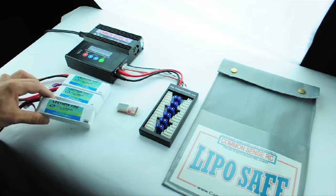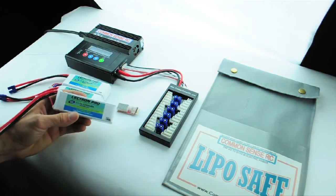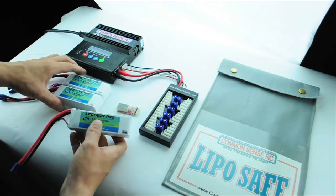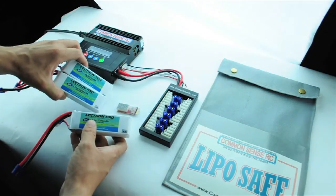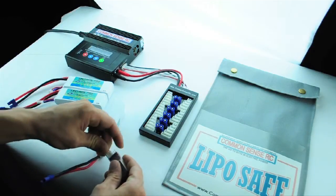The way parallel charging works is the charger looks at the batteries wired in parallel as if they're one large pack with the same voltage of one pack and all their capacities combined. The batteries need to be the same chemistry, same cell count, and have the same voltage as measured before the charge.